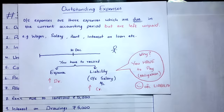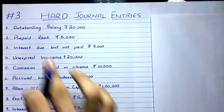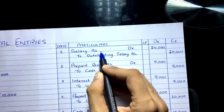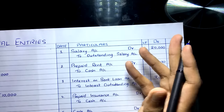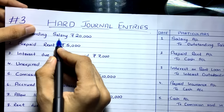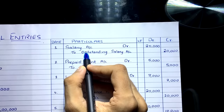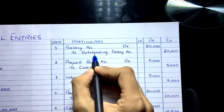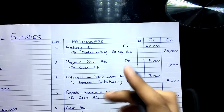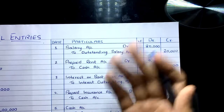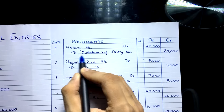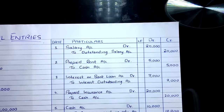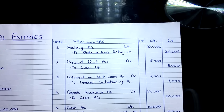The entry for outstanding salary is: salary account debit — expense is increasing, you have incurred the expense — to outstanding salary account credit 20,000. You haven't paid, so no cash account; instead a liability is created called outstanding salary account. 20,000 debit equals 20,000 credit.